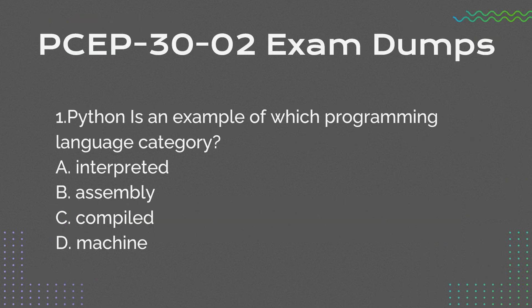Question 1: Python is an example of which programming language category? a. Interpreted. b. Assembly. c. Compiled. d. Machine.